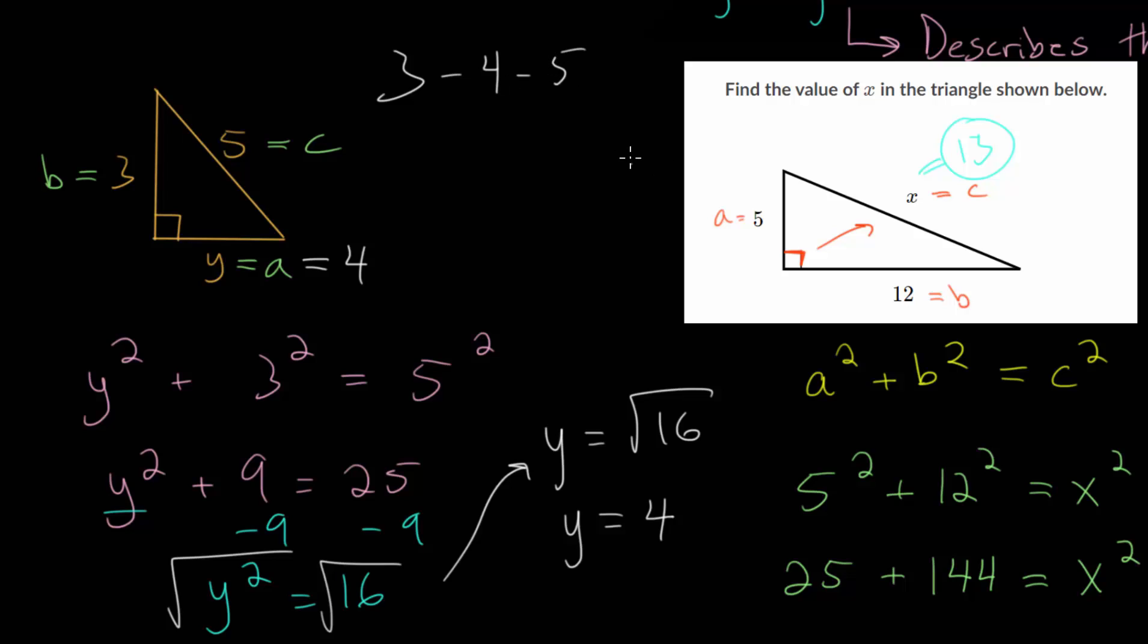So these triples show up quite often. They could also be multiples of this. It could be 6, 8, and 10, or maybe 9, 12, and 15. So you want to look for these patterns since they can save you time from actually calculating using the Pythagorean theorem.